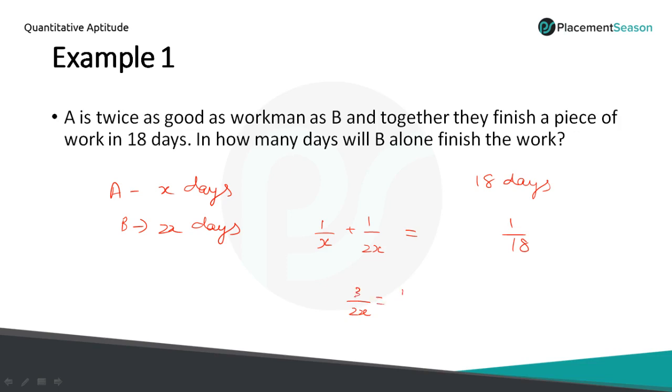2 by 2x plus 1 by 2x equals 1 by 18. Find the value of x here, you will get 27.